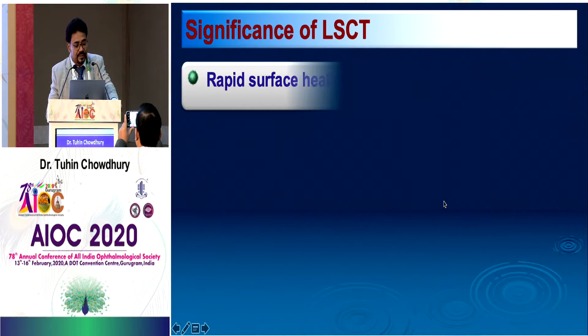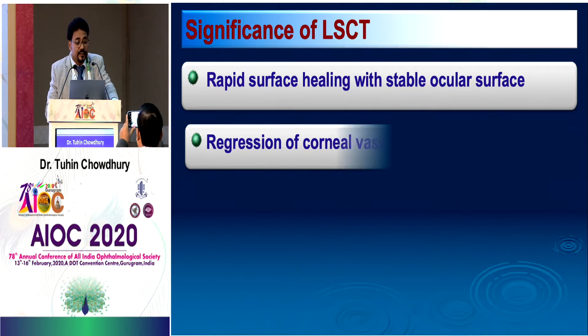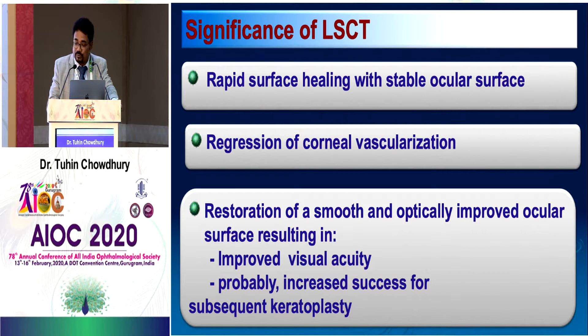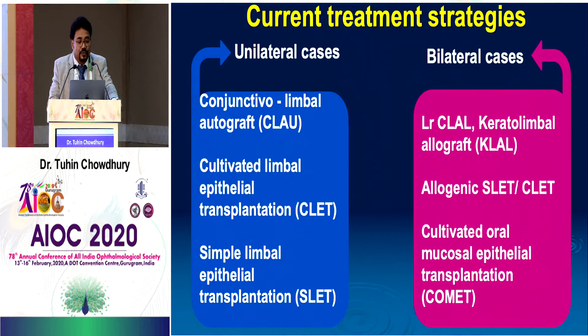The only treatment for limbal stem cell deficiency is limbal stem cell transplantation. A successful transplantation can achieve rapid surface healing with a stable ocular surface, regression of corneal vascularization, no recurrent erosions or persistent epithelial defects, restoration of a smooth and optically improved ocular surface with improved visual acuity, and probably increased success for subsequent keratoplasty. In unilateral cases we can go for conjunctival limbal autograft, cultivated limbal epithelial transplantation, and recently simple limbal epithelial transplantation (SLATE).